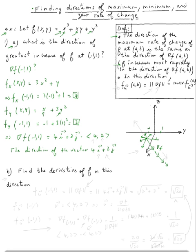Question b asks us to find the derivative of f in that direction — in other words, find the maximum rate of change. Using the formula, the directional derivative in the direction of maximum increase at negative one, one is simply the magnitude of the gradient of f. The magnitude of 4i plus 2j equals the square root of four squared plus two squared, which is the square root of twenty. That is the maximum rate of change at the point negative one, one.